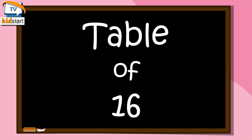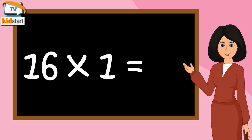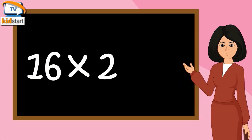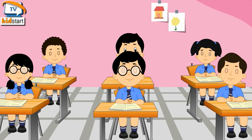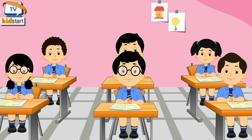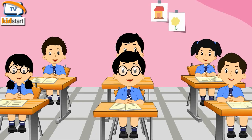Table of Sixteen. Sixteen ones are sixteen. Sixteen twos are thirty-two. Sixteen threes are forty-eight. Sixteen fours are sixty-four.